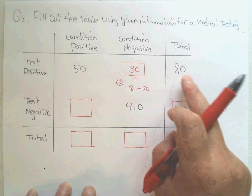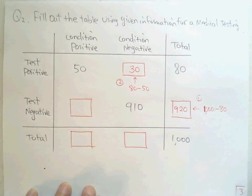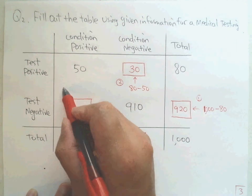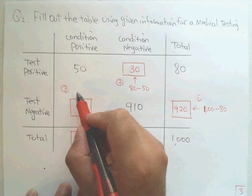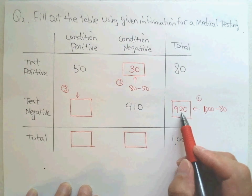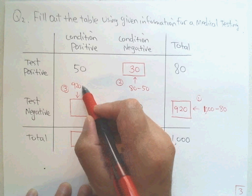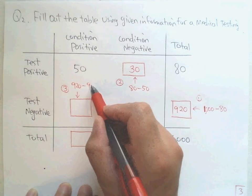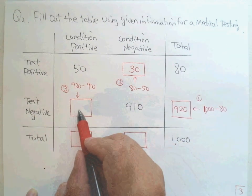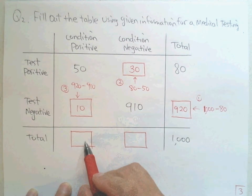Step three: finding the false negative. The two values in the negative test row added together equal 920. We know 910 is true negative, so the false negative is 920 minus 910, which gives us 10. That is 10 false negatives among all the negative test results.